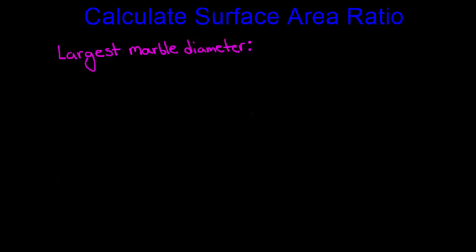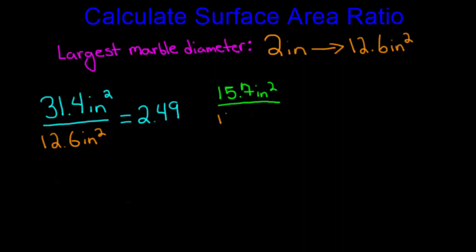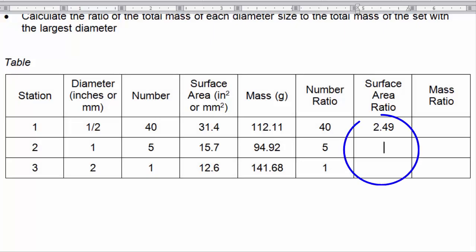Learners should calculate the surface area ratio in a similar fashion, using the group of marbles with the largest diameter as a reference. In our case, the largest marble diameter was 2 inches, which had a surface area of 12.6 square inches. We calculate the surface area ratio for the first group by dividing 31.4 square inches by 12.6 square inches, giving a ratio of 2.49. For the second station, we divide 15.7 square inches by 12.6 square inches, giving a ratio of 1.25. And for the third station, dividing 12.6 by itself gives a surface area ratio of 1. We then add these surface area ratios into our table.